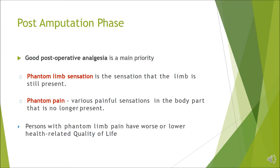Good post-operative analgesia is a main priority. There are two varieties of phantom limb phenomenon. One is phantom limb sensation — the sensation that the limb is still present — which is not very distressing. The other is phantom pain: various painful sensations in the body part that is no longer present, which is very distracting and difficult to bear. Studies have proven that persons with phantom limb pain have worse overall health-related quality of life.